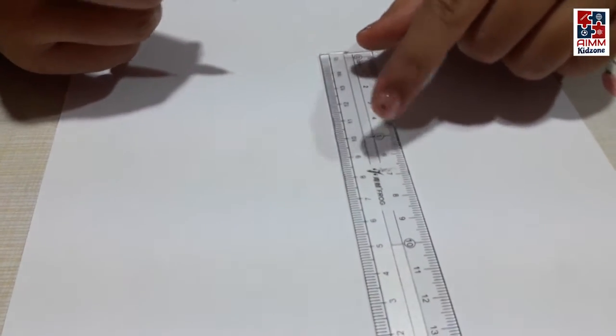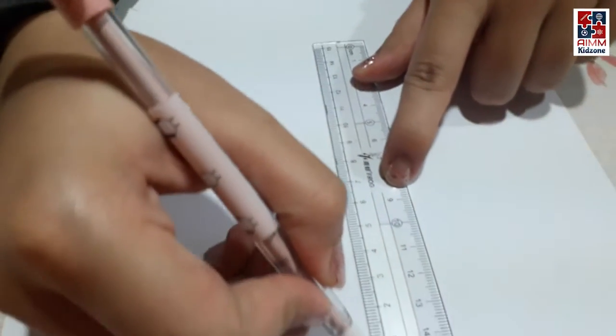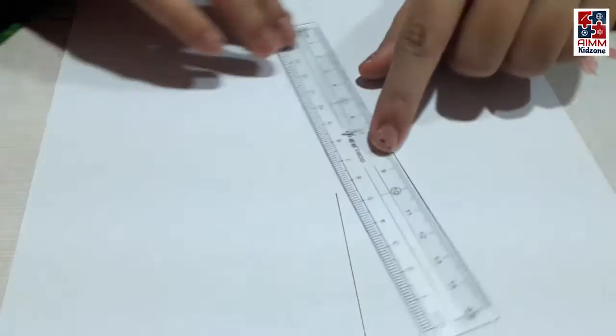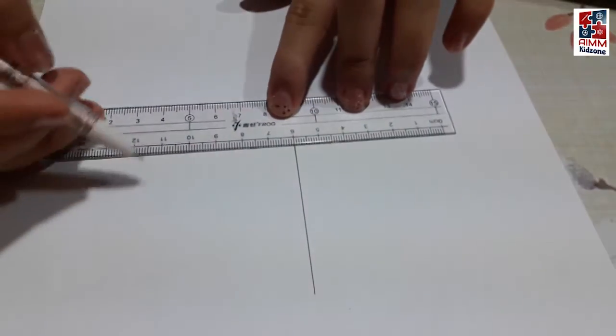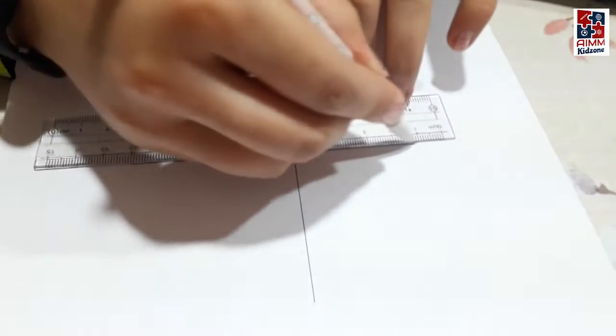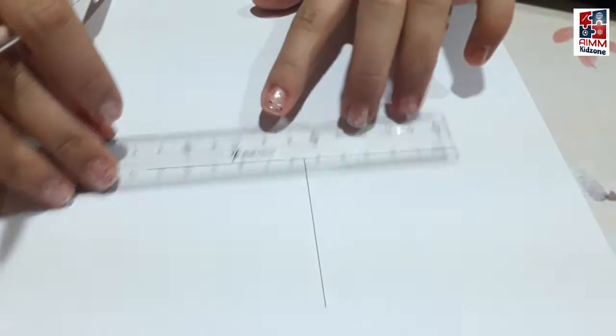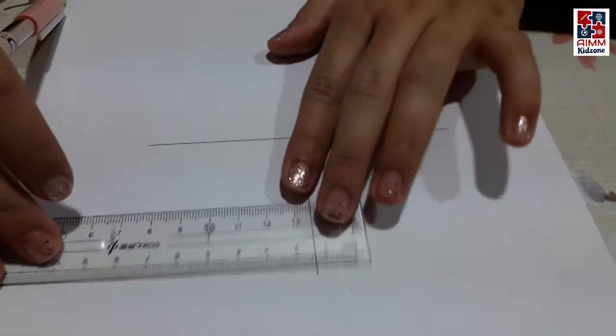You are going to make a line of 6 cm, and then you are going to make 12 cm lines here and here.